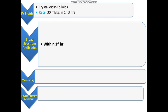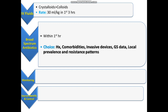The choice of antibiotics depends on the patient history, any previous history with any organism, comorbidities, presence of invasive devices, gram-stain data, and local prevalence and resistance patterns. The most common organisms causing septic shock are bacteria, so we should cover both gram-positive and gram-negative bacteria.